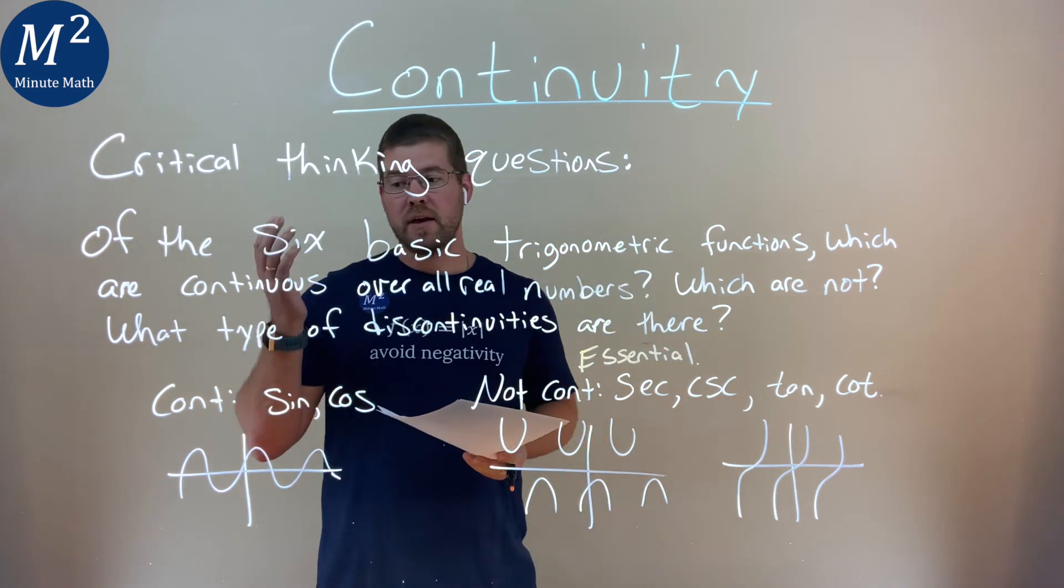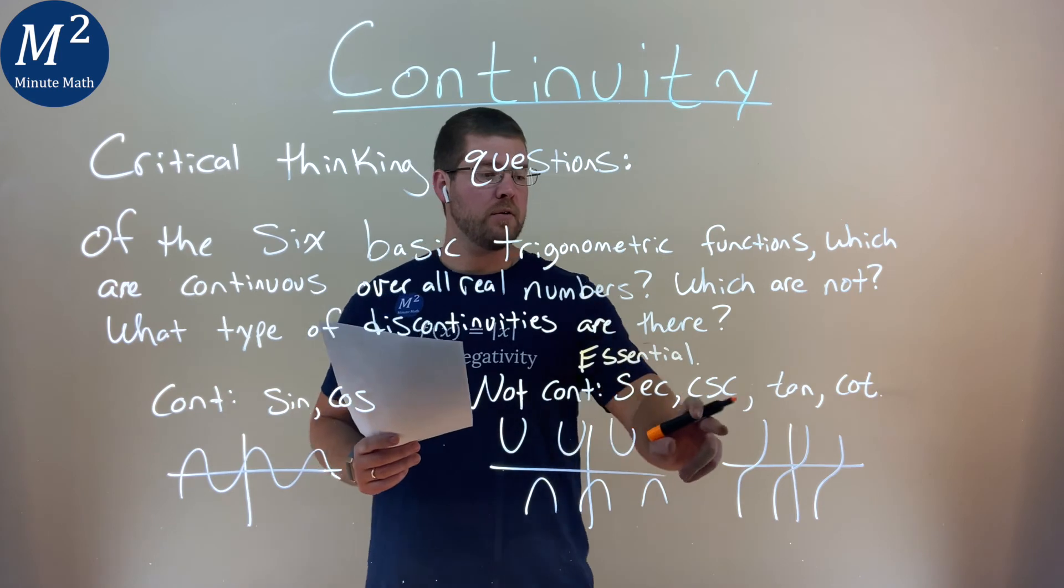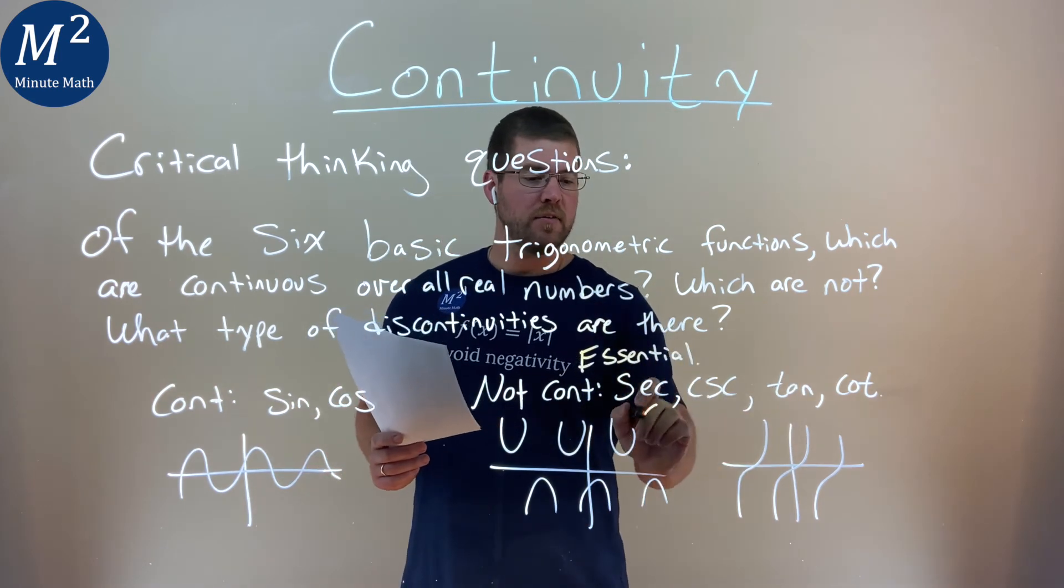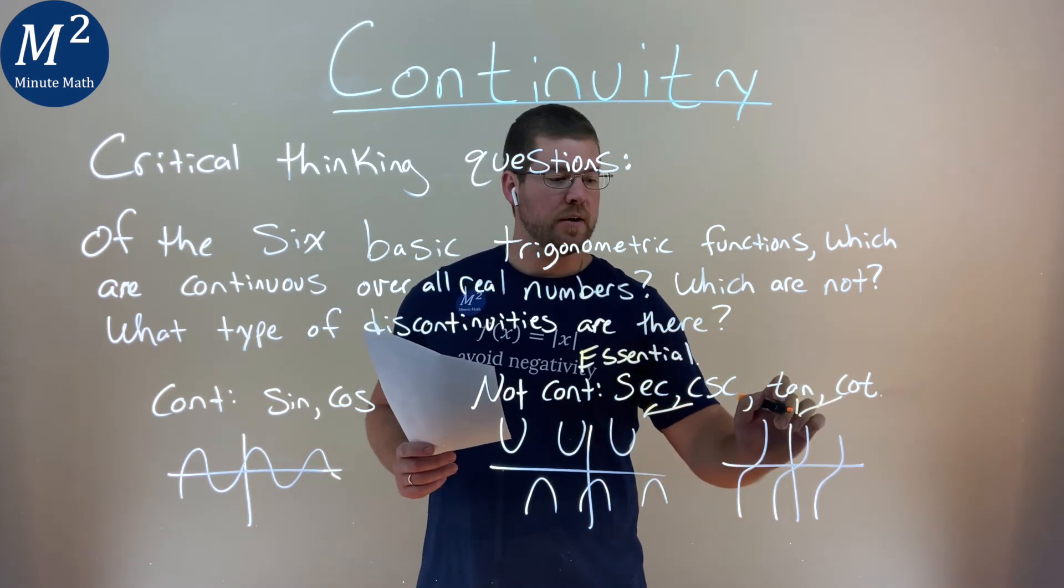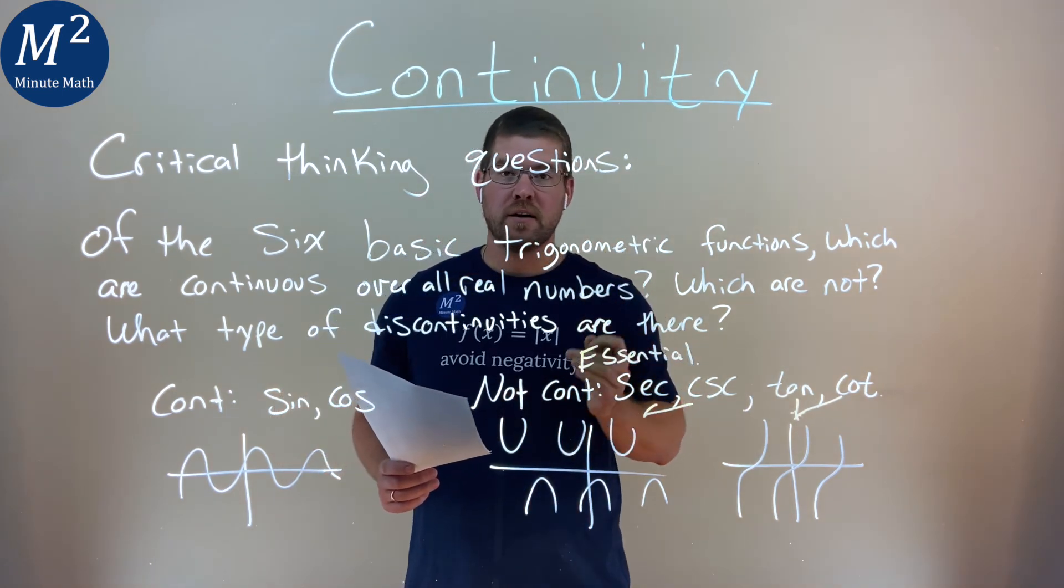So again, our final answer: the continuous functions are sine and cosine. The non-continuous functions are secant, cosecant, tangent, and cotangent. We can see the graph right here. And the type of discontinuity is an essential discontinuity for them.